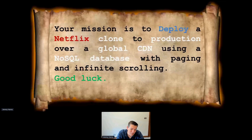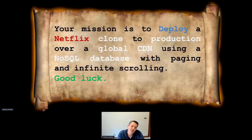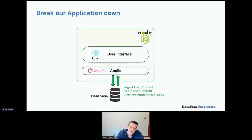Your mission, should you choose to accept it: deploy a Netflix clone to production over a global CDN using a NewSQL database with paging and infinite scrolling. We have a GitHub repo that provides guidance. The basic setup is a React interface on top of GraphQL, which goes down into the database — a seamless API on top of Cassandra.